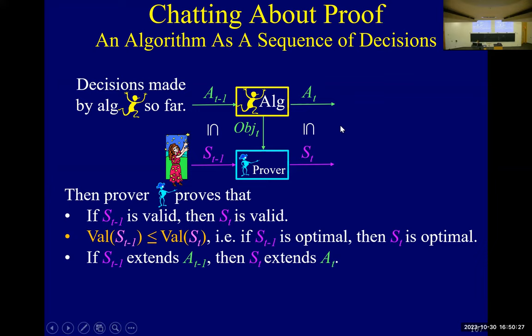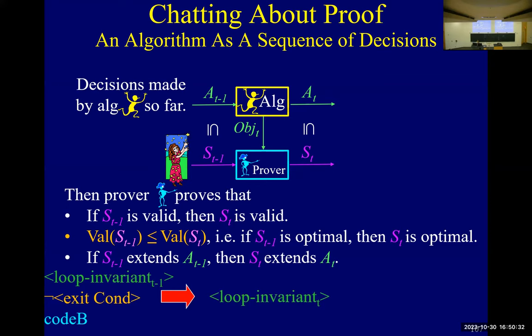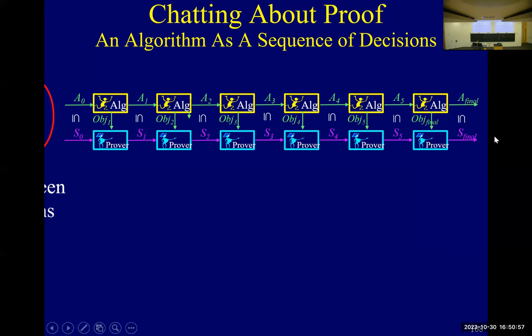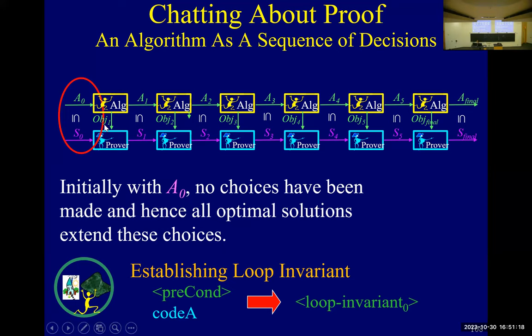At the beginning, she can be holding any solution, because the algorithm hasn't done anything yet, so any optimal solution is fine. When we get to the end, the algorithm has a full solution, so these have to be equal. Initially nothing is done — that's how we establish the loop invariant. You want to say: from the precondition, we have a bunch of objects and the algorithm hasn't done anything yet, so there exists an optimal solution consistent with that.